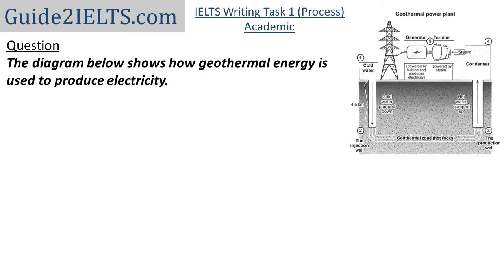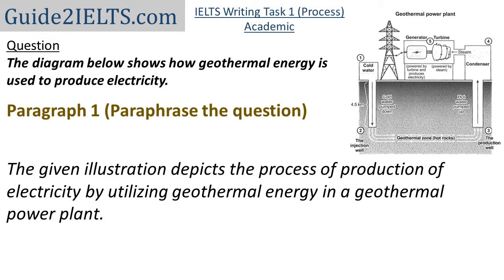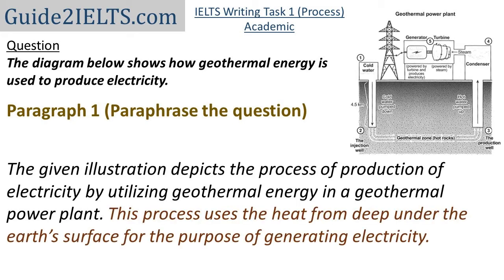Let's begin with the first paragraph. The question says: 'The diagram below shows how geothermal energy is used to produce electricity.' I'll change it to: 'The given illustration depicts the process of production of electricity by utilizing geothermal energy in a geothermal power plant. This process uses the heat from deep under the earth's surface for the purpose of generating electricity.'